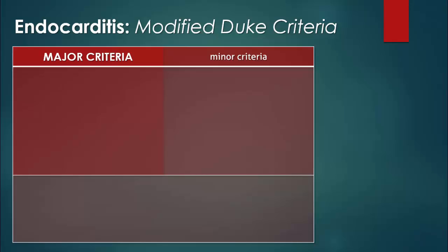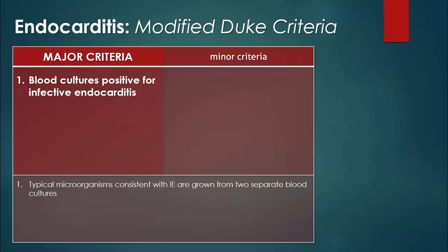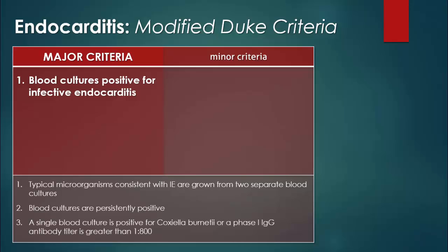There are two major criteria for infective endocarditis. The first is a positive blood culture for endocarditis. This criteria is established in one of three ways: if typical microorganisms consistent with infective endocarditis are found on two separate blood cultures, if blood cultures are persistently positive, or if a single blood culture is positive for Coxiella burnetii, or a phase 1 IgG antibody titer greater than 1 to 800.